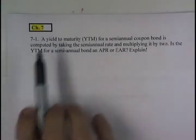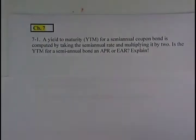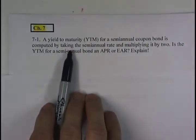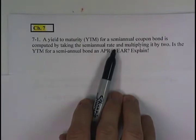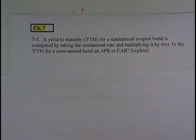In the supplemental practice or homework problems here for chapter 7, we'll start with 7.1, which says a yield to maturity for a semi-annual coupon bond is computed by taking the semi-annual rate and multiplying it by 2. Is the YTM for a semi-annual bond an APR or an effective annual rate? And explain.